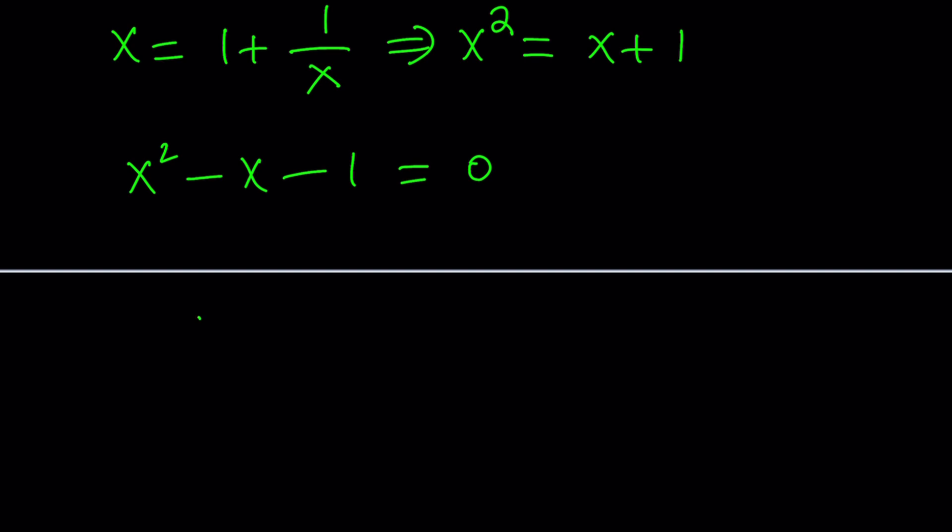So let's go ahead and solve this using the quadratic formula. Negative b plus minus the square root of b squared minus 4ac which is 5 divided by 2. So we get two solutions: 1 plus root 5 over 2 and 1 minus root 5 over 2.